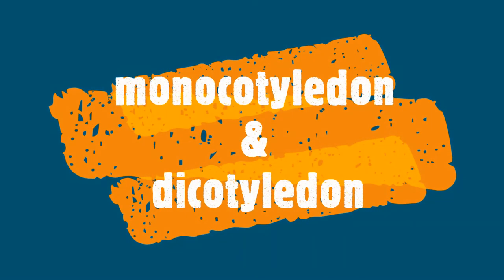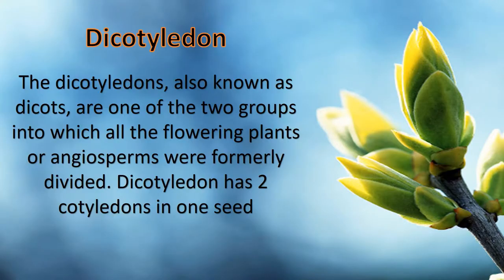Hi, it's Philip. Today we're going to talk about monocotyledon and dicotyledon, and their differences. Plants are basically divided into flowering and non-flowering plants. The flowering plants are further divided into dicotyledon and monocotyledon.